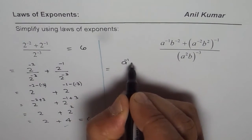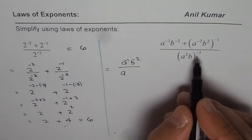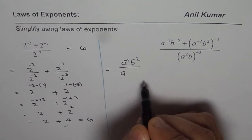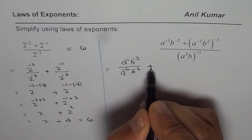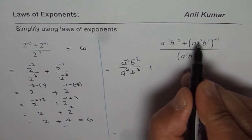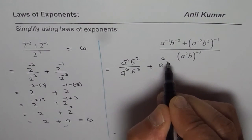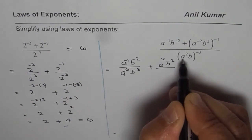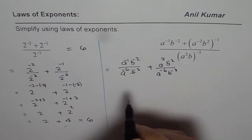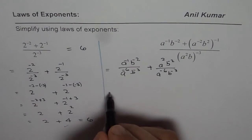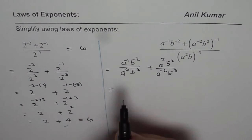We write the terms individually. First term: A to the power of minus 1 times B to the power of minus 2, divided by A squared B to the power of minus 3. We expand A squared as A to the power of minus 3 times 2, which is A to the power of minus 6, and B to the power of minus 3. Second term: multiplying both exponents of A to the power of minus 2 B squared by minus 1 gives A squared B to the power of minus 2, divided by A to the power of minus 6 times B to the power of minus 3. When dividing, we subtract the powers.